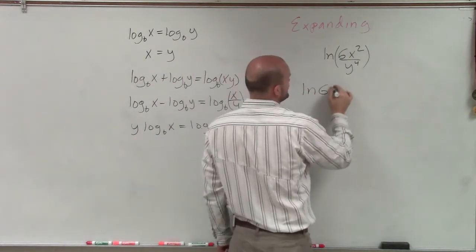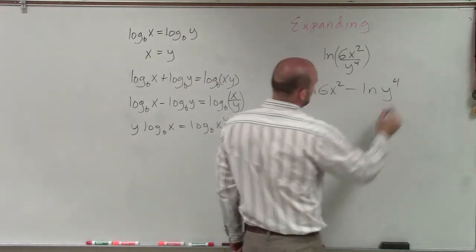So I have ln of 6x squared minus ln of y to the fourth.